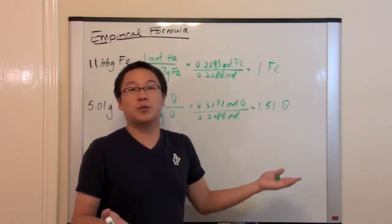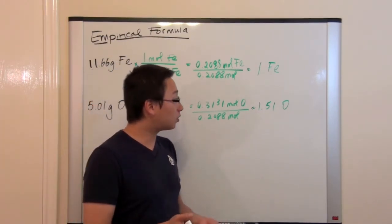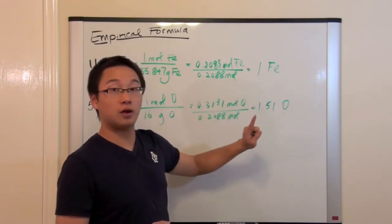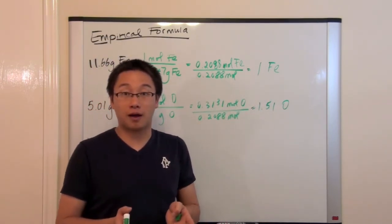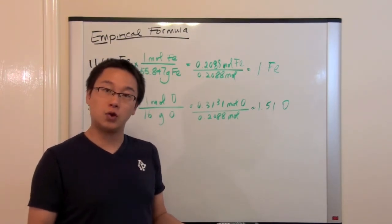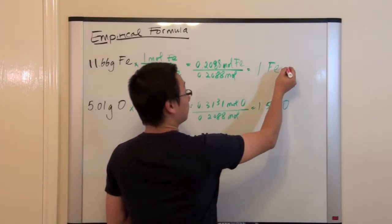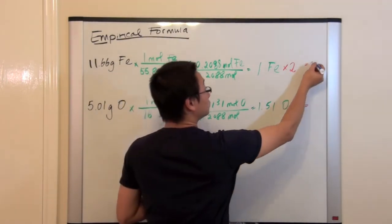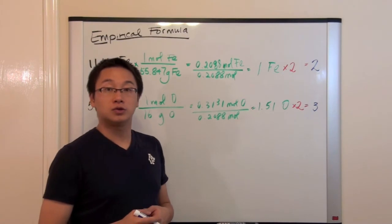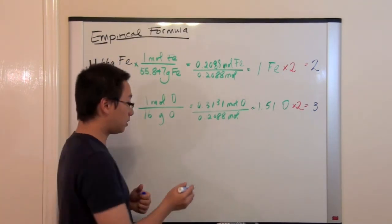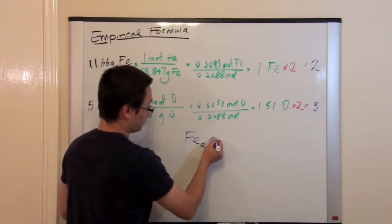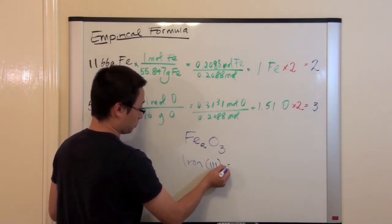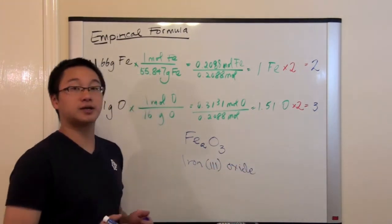So, then we have multiplication remaining. If we are going to multiply, what can we multiply? Well, think about this. We can multiply a number that can make both numbers to be an integer, a whole number. And 1, so here 1, 1.5. The smallest number that we can multiply to get both numbers to be whole number will be 2. So, what we are going to do is multiply this by 2, multiply this by 2. So, what we get here is that we would have 2 iron and 3 oxygen. So, the empirical formula for this question is going to be Fe2O3.